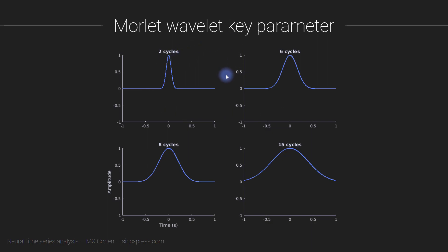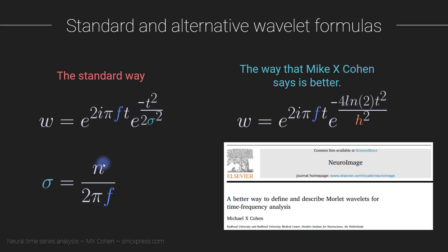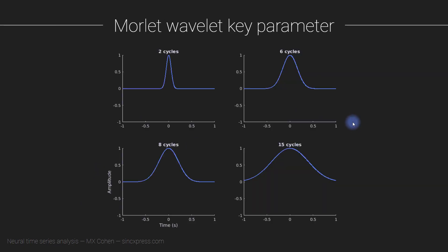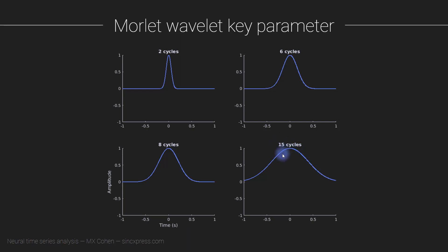What I actually want to talk about in this lecture is this parameter n — the number of cycles — which is the same thing as parameter h, the full width at half maximum. Here you are looking at Gaussians in the time domain with different n parameters. The number of cycles is 2, 6, 8, and 15. As the number of cycles parameter increases, the Gaussian gets wider, meaning the wavelet energy is wider in time.